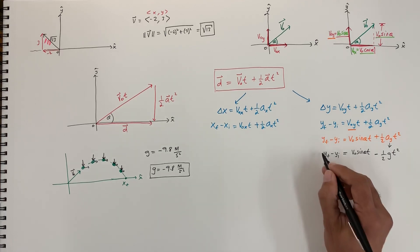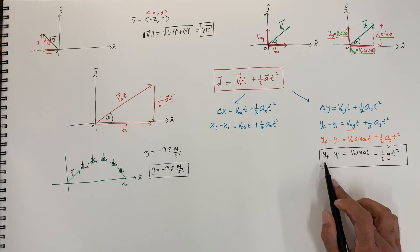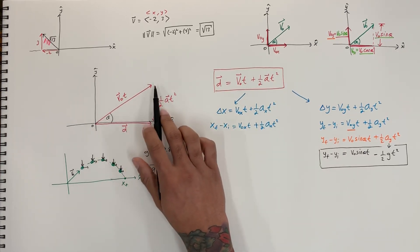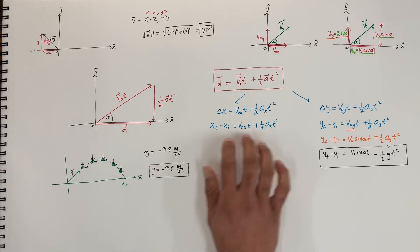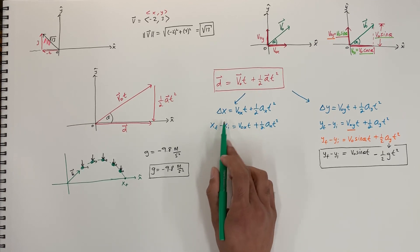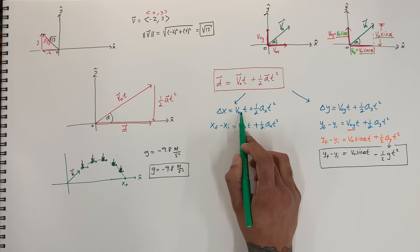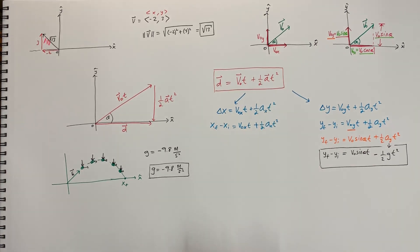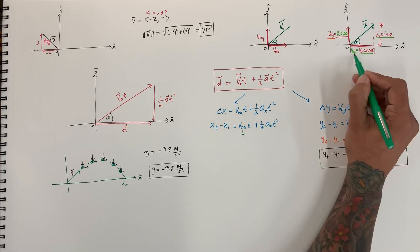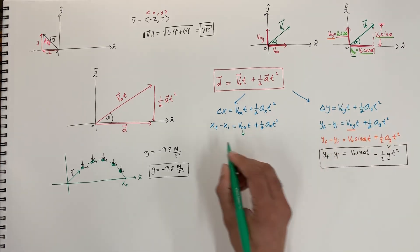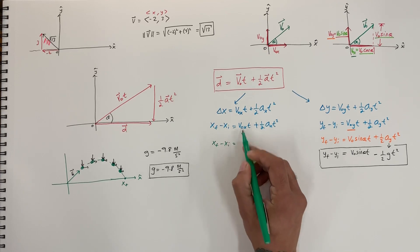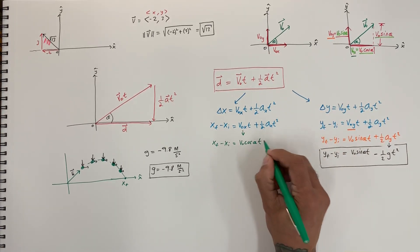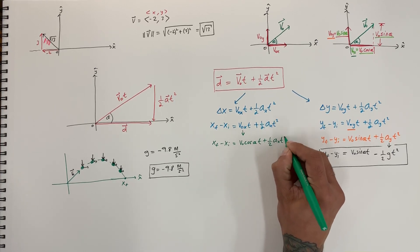Now let's work on the x displacement. So the change in x — x final minus x initial — equals the velocity initial in x times time, plus one half acceleration in x times t squared. We know this velocity initial in x is v naught cosine theta, so let's change that. The left side stays the same, and this becomes v naught cosine theta times t, plus one half a_x t squared. Now let's look at this a_x — the acceleration in the x value.